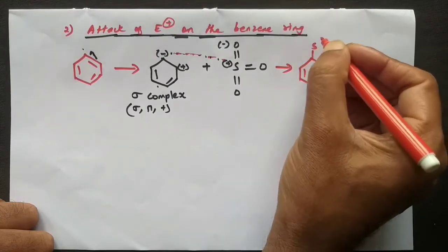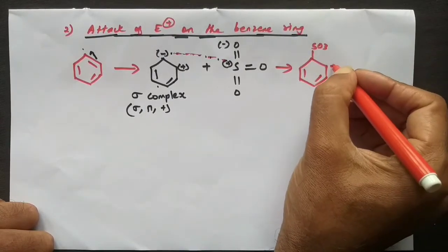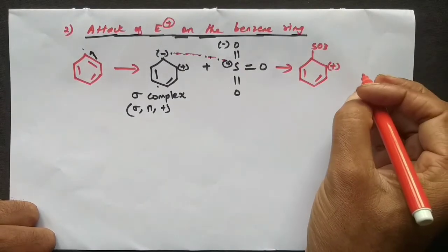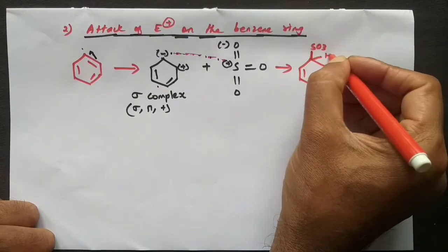So you can write the S double bond O, double bond O, that you can write as SO3. And here still we have the positive charge. And we know that in case of carbon, each place we got a carbon and a hydrogen.